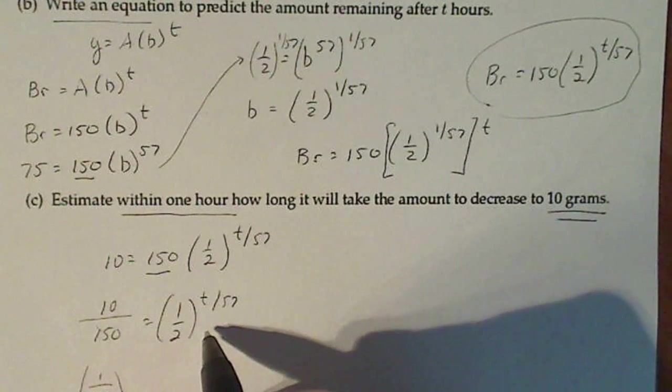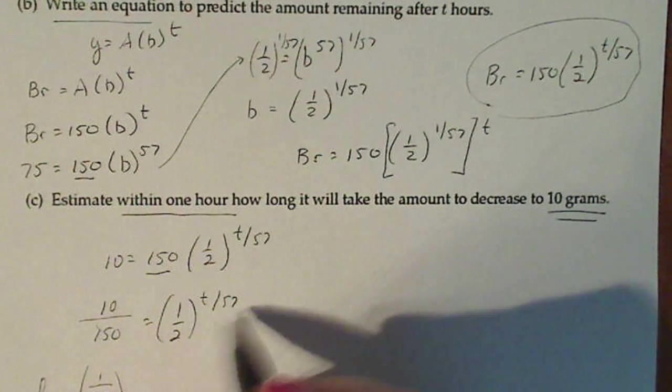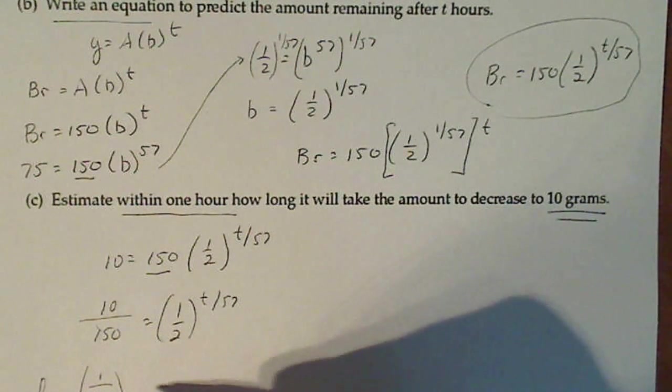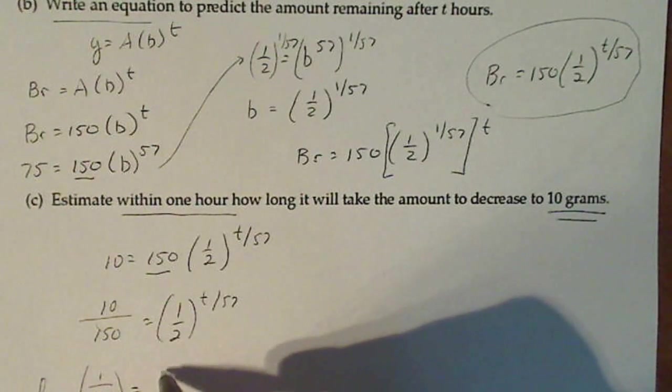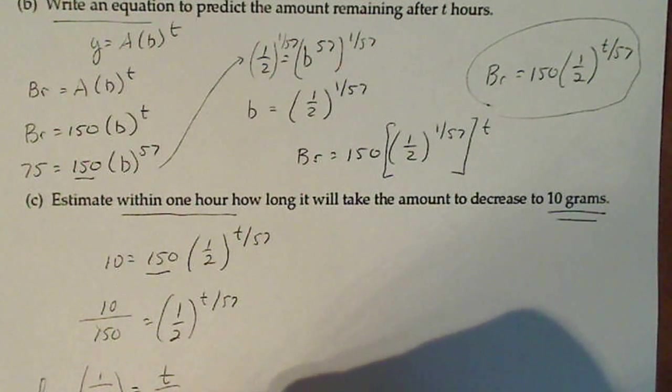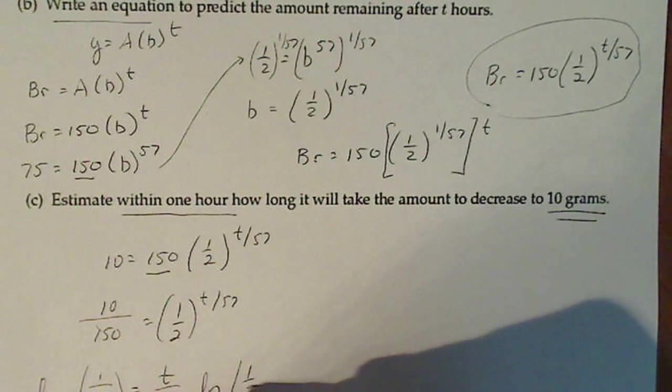I'm going to take at this point the natural log of both sides in order to bring this t down out of the power. So this becomes t over 57 times the natural log of one-half.